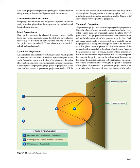Chart Projections. Chart projections may be classified in many ways. In this book, the various projections are divided into three classes according to the type of developable surface: azimuthal, cylindrical, and conical. An azimuthal projection is one in which points on the earth are transferred directly to a plane tangent to the earth. If the origin of the projecting rays is the center of the sphere, a gnomonic projection results. If it is located on the surface of the earth opposite the point of the tangent plane, the projection is a stereographic. If it is at infinity, an orthographic projection results.